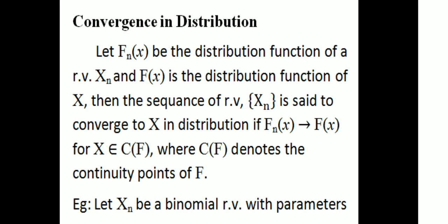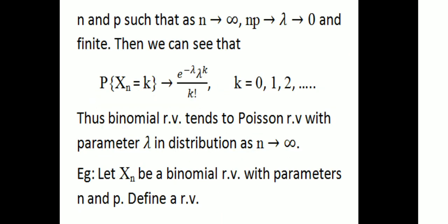Next is convergence in distribution. Let Fn(x) be the distribution function of random variable Xn and F(x) be the distribution function of X. Then the sequence of random variables Xn is said to converge to X in distribution if Fn(x) tends to F(x) for x belonging to C(F), where C(F) denotes the continuity points of F.